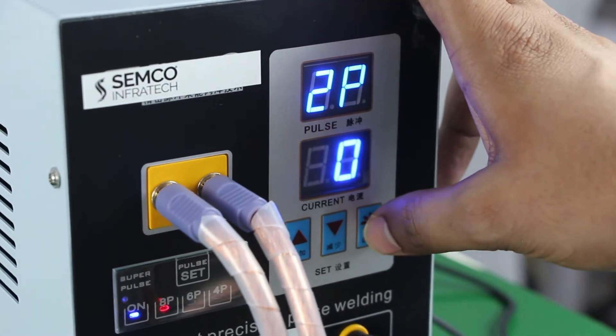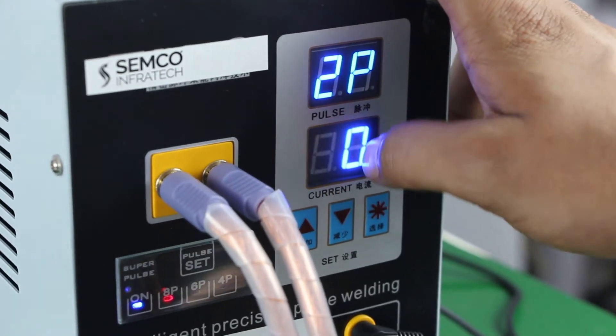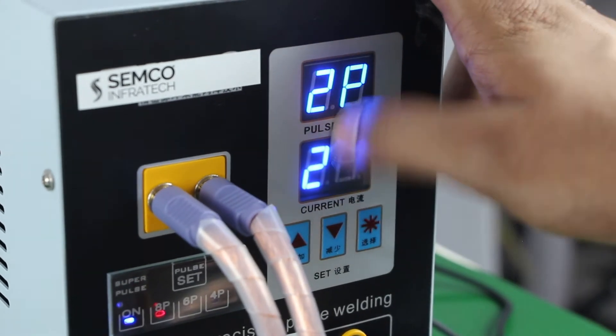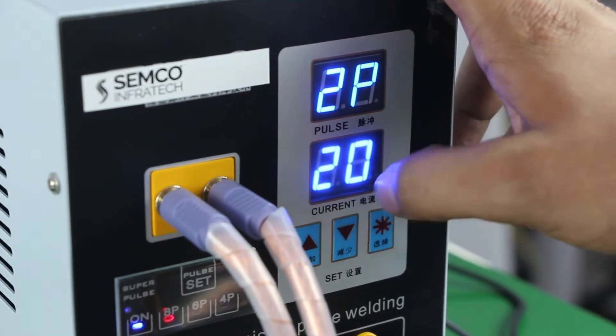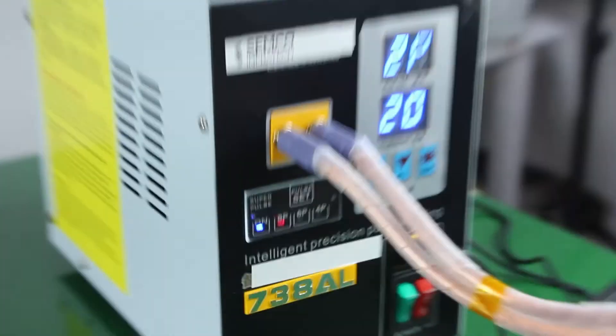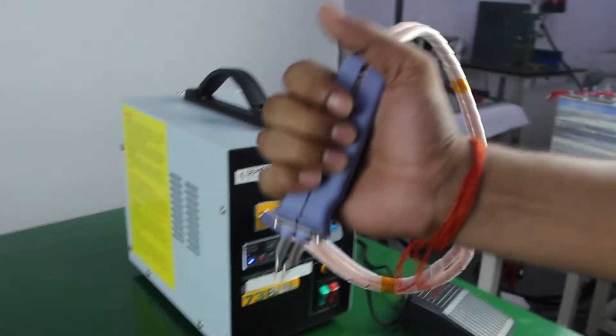And this is for selecting the number of pulses we want to use, like 2P, 4, 6, 8, like this. And this is our manual handgun.